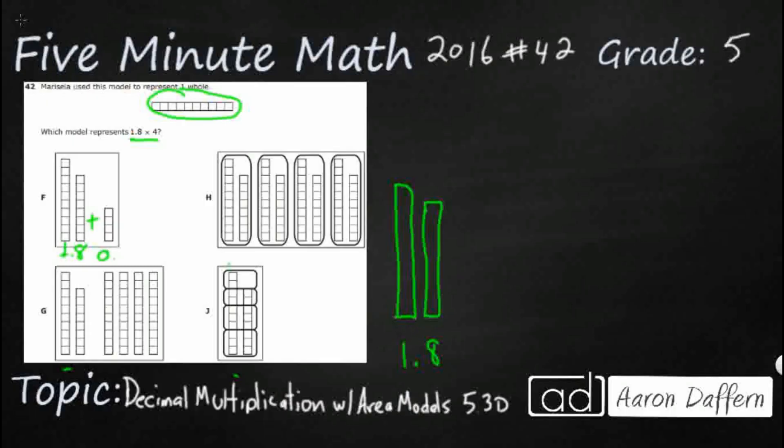So what this did is rather than multiplying 1.8 times 4, it added 1.8 and 4 tenths, which is going to get you 2 and 2 tenths. So that's not really what we're looking for.